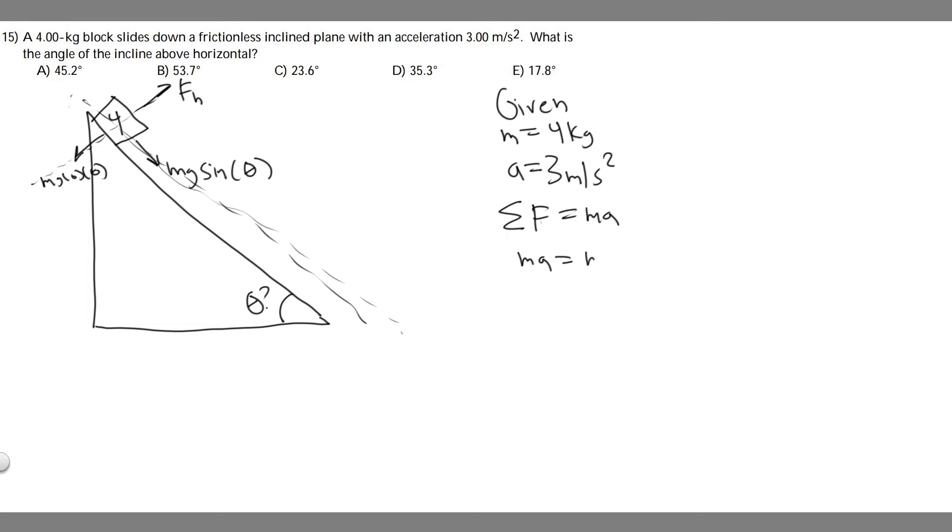So basically, ma is equal to mg times the sine of theta. This theta is the same as the incline theta. So we can solve for theta just by plugging in the values. We know the mass is 4, the acceleration is 3, and g is 9.8, the acceleration due to gravity.